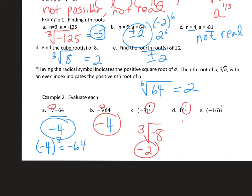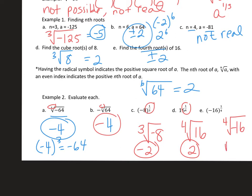16 to the 1/4 is the 4th root of 16, which is positive 2 — we only take the positive number when writing it as a radical. And the 4th root of negative 16: since it's an even root, we can't take the even root of a negative number, because you can't write a real number 4 times to get a negative number. So this is not real.